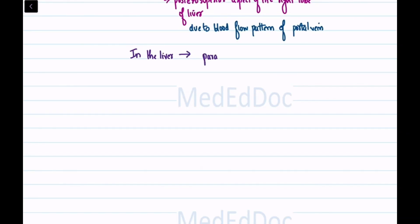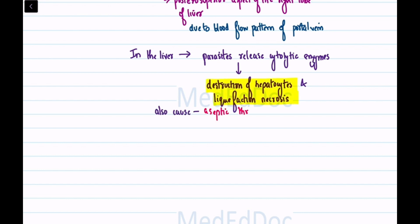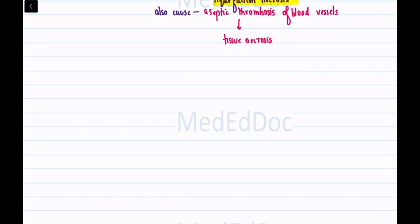Once in the liver, the parasites release cytolytic enzymes, leading to destruction of hepatocytes and liquefaction necrosis. They also cause aseptic thrombosis of blood vessels, resulting in further liver tissue necrosis.